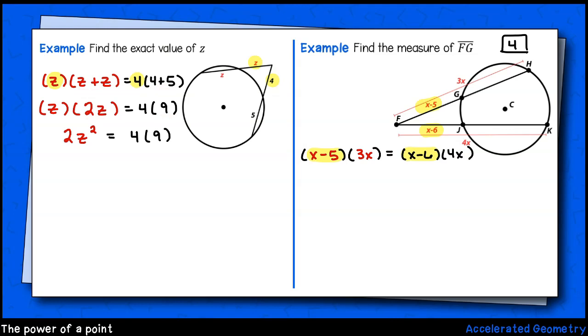On the left side, I multiply my two monomials, and I have z times 2z equals 2z squared. On the right, I still have 4 times 9. I'll go ahead and divide both sides of the equation by 2. I now have z squared equals 2 times 9. I'll take the square root of both sides of the equation. Now I have z equals the square root of 2 times 3. Or, in standard form, z equals 3 times the square root of 2.